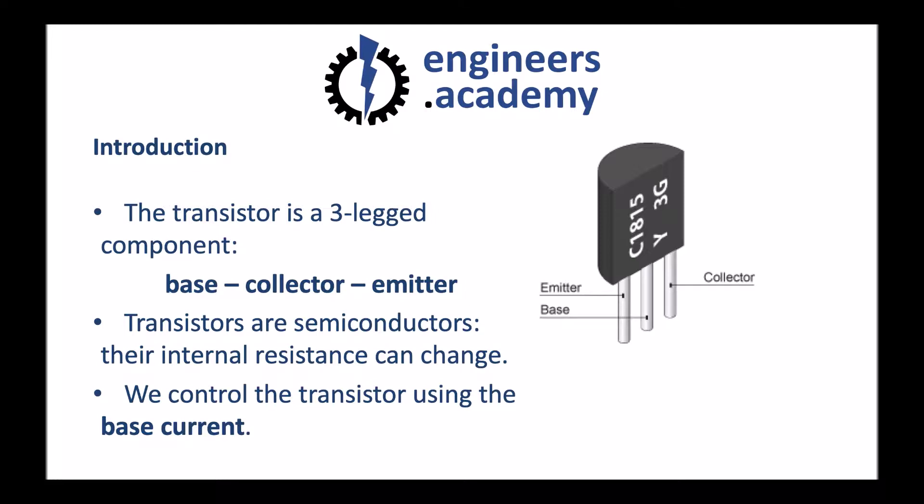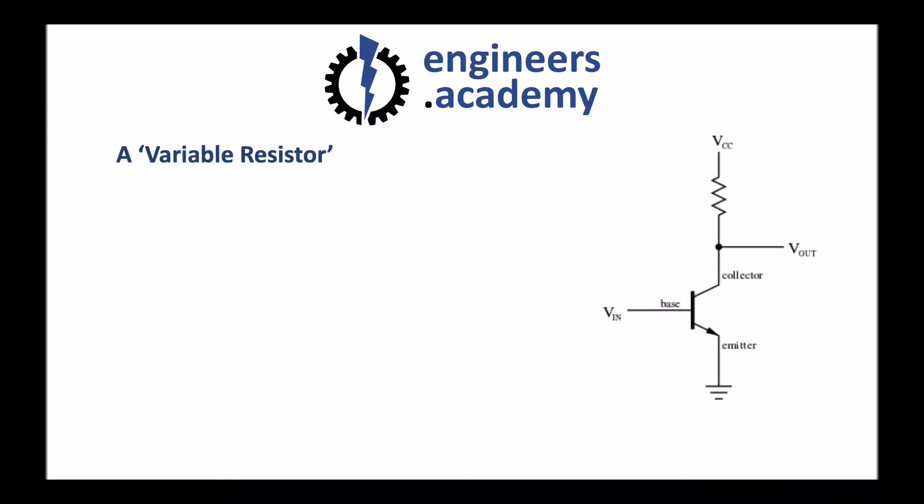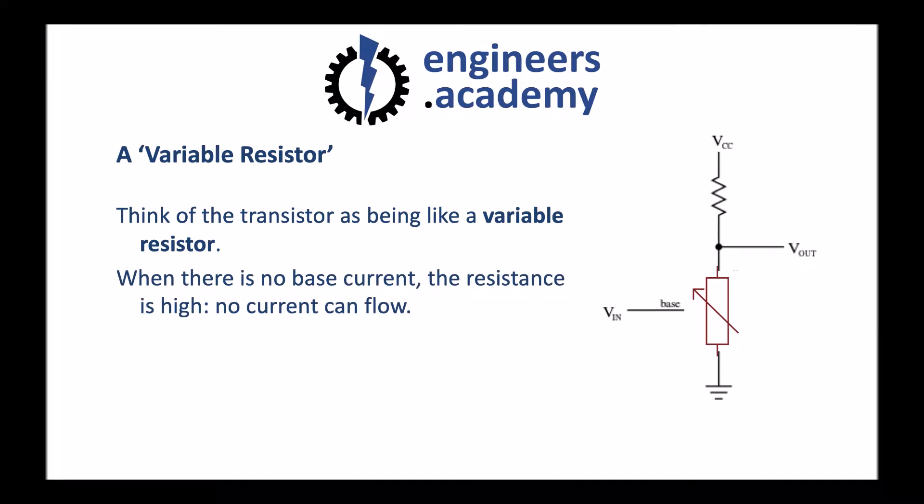The most important point is that we control the transistor using the base current. We can imagine the transistor as being like a variable resistor as an analogy. When there's no base current, the resistance is high and no current can flow. But when a small base current is applied, the resistance becomes very low and current can flow. Looking at the diagram, the resistance is between the collector at the top and the emitter at the bottom.